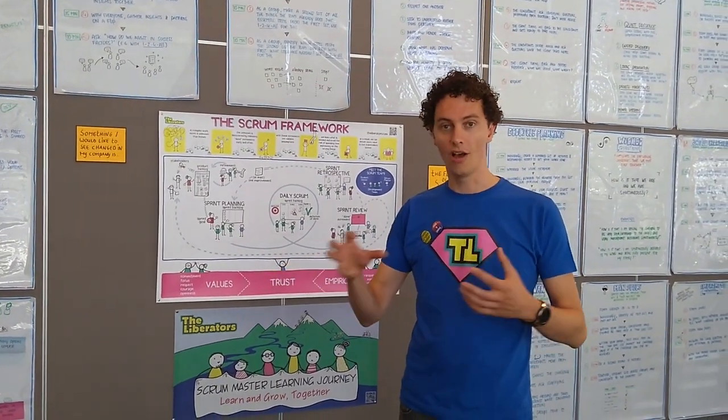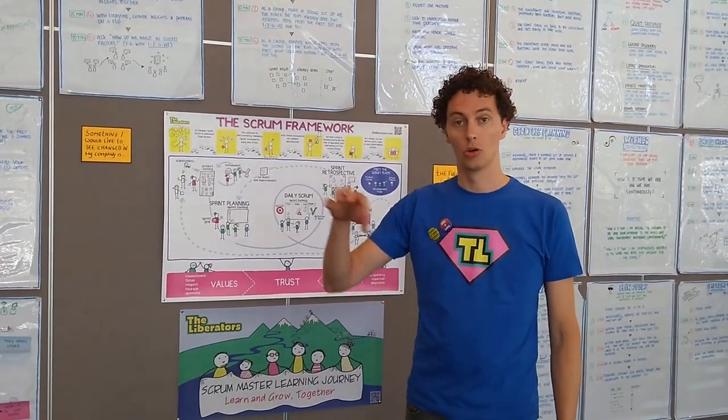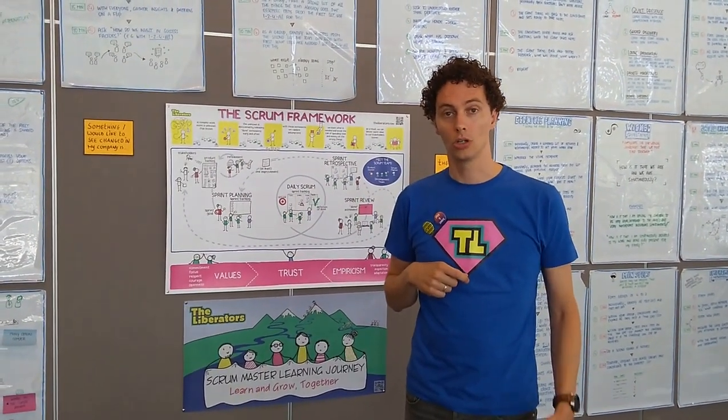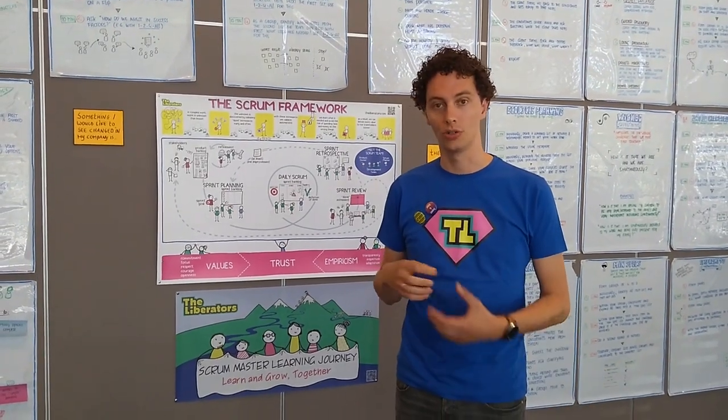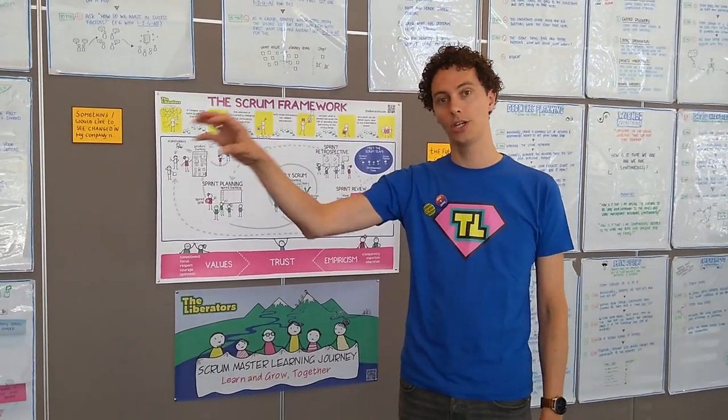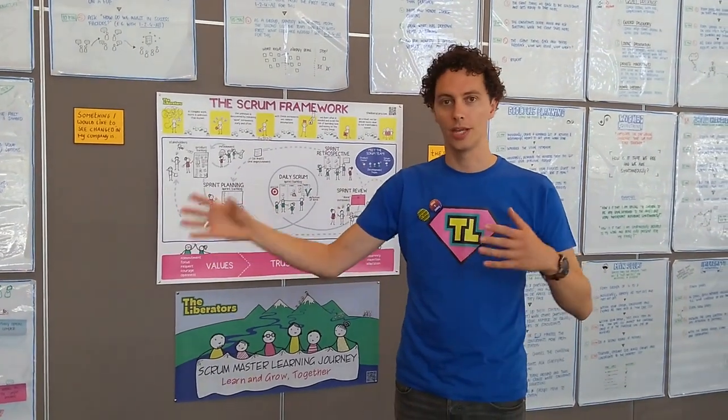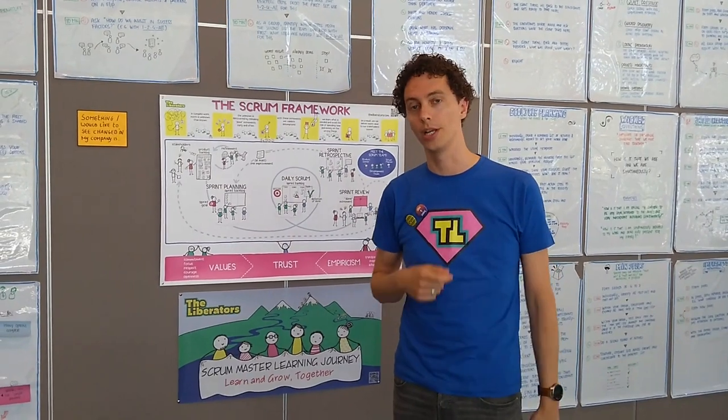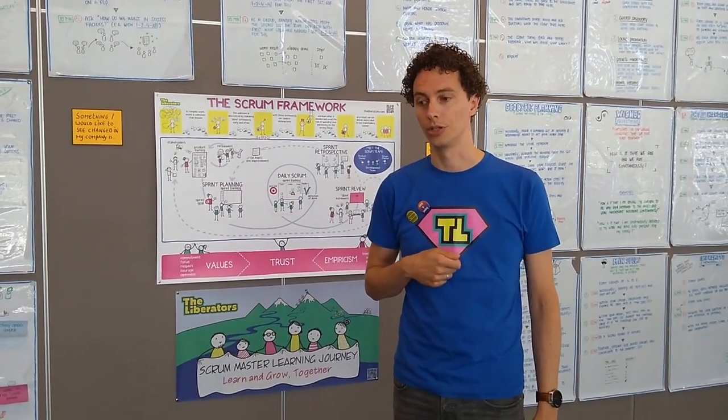In a shift and share you have multiple stations where groups of people share their experience from the past sprint with each other. A simple way to do a sprint review is to invite members of your development team to manage different stations. Each station picks a topic and all the stakeholders are invited to tour the various stations. It's a really nice way to very quickly share the experience of the previous sprint.